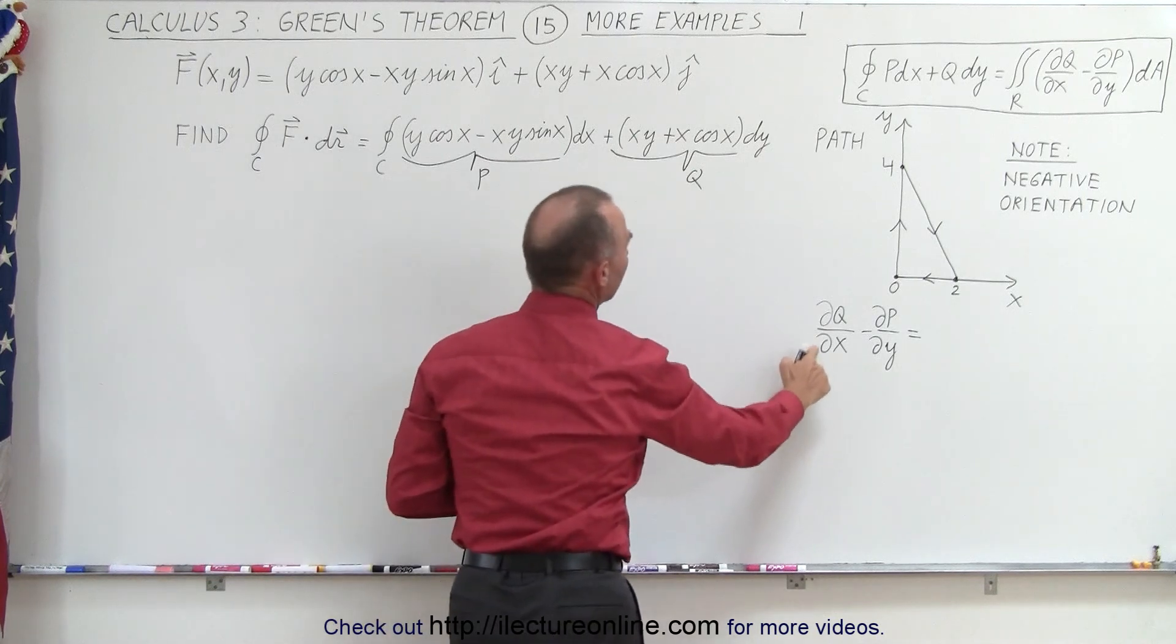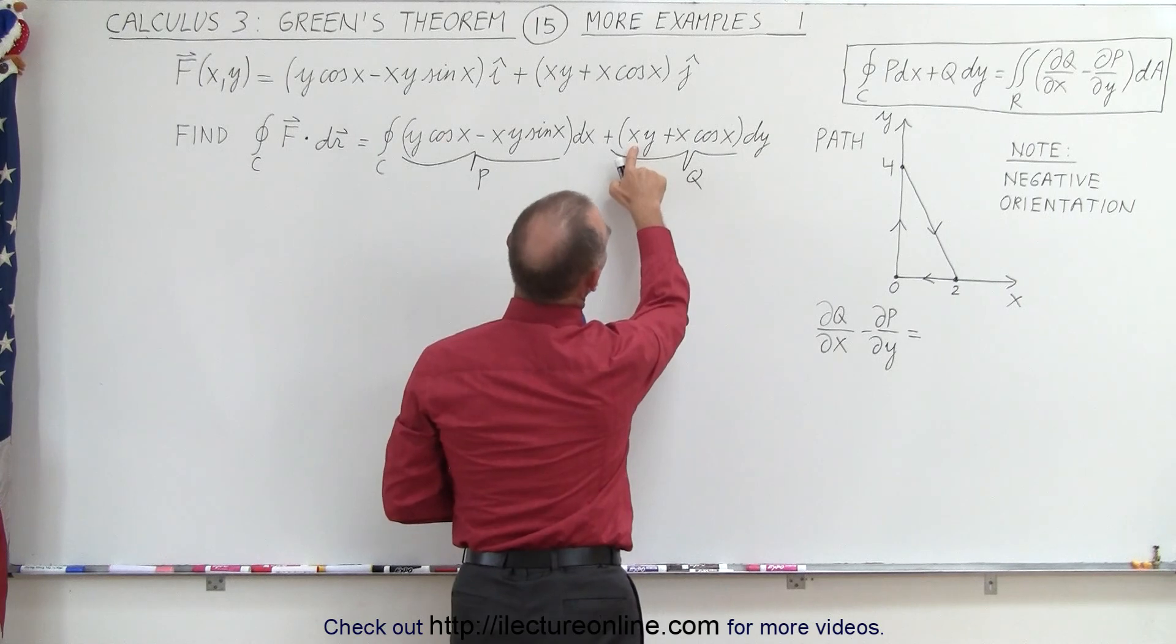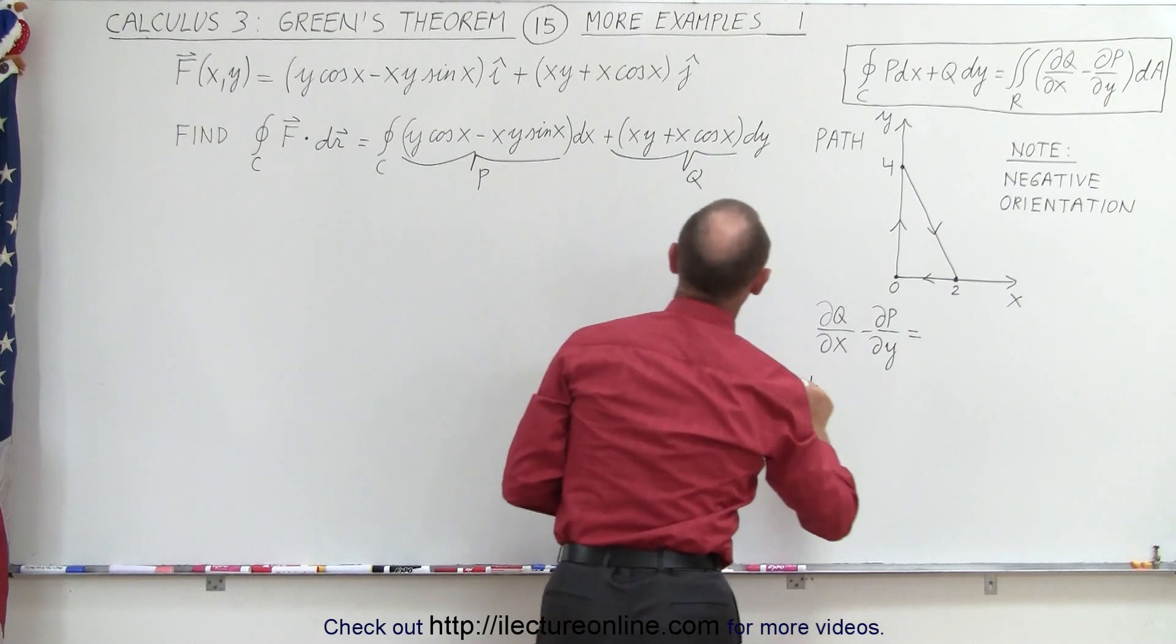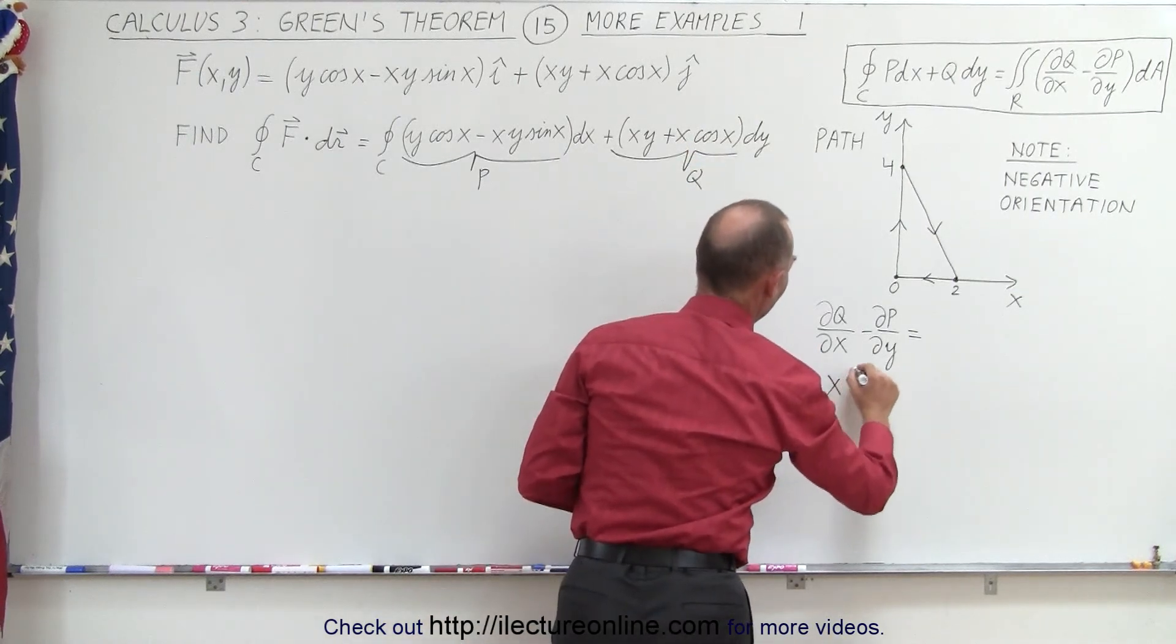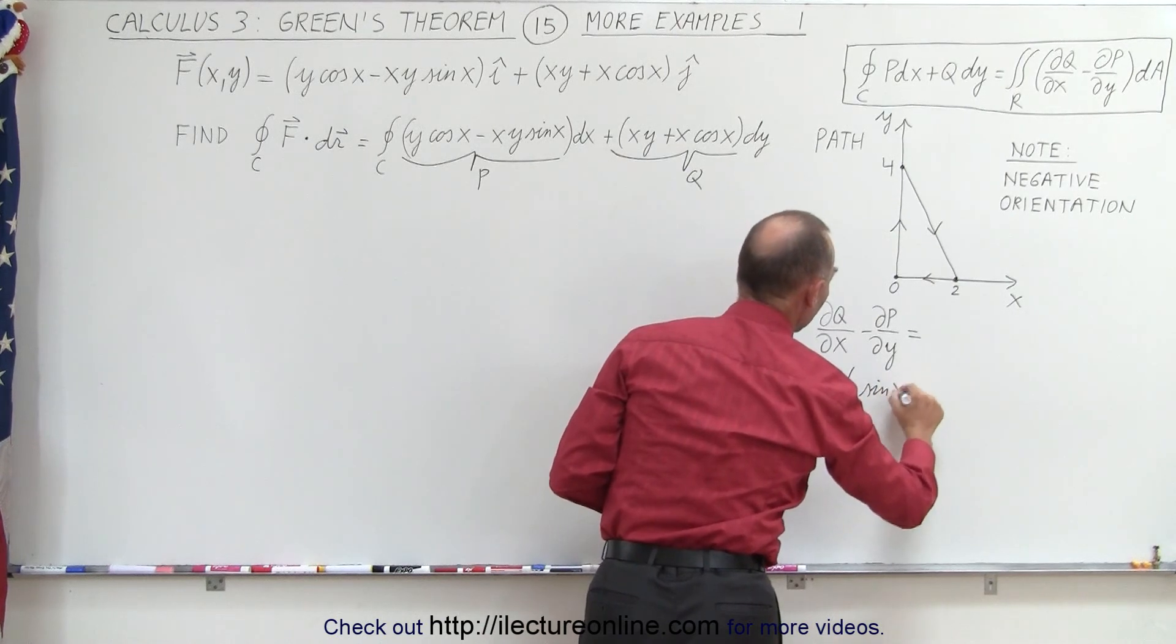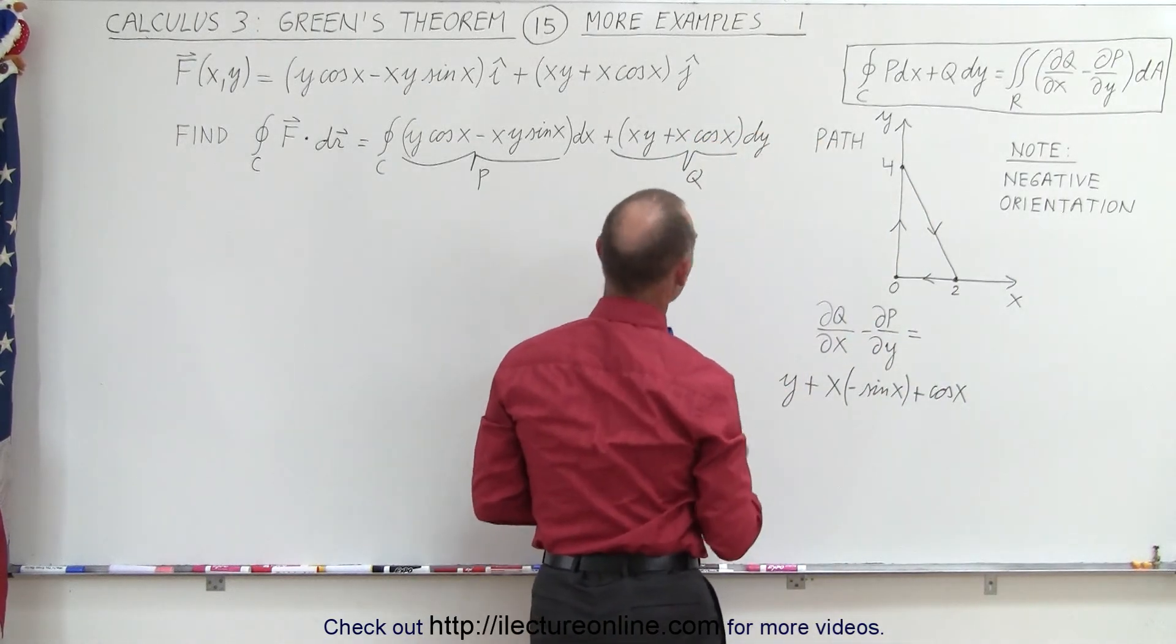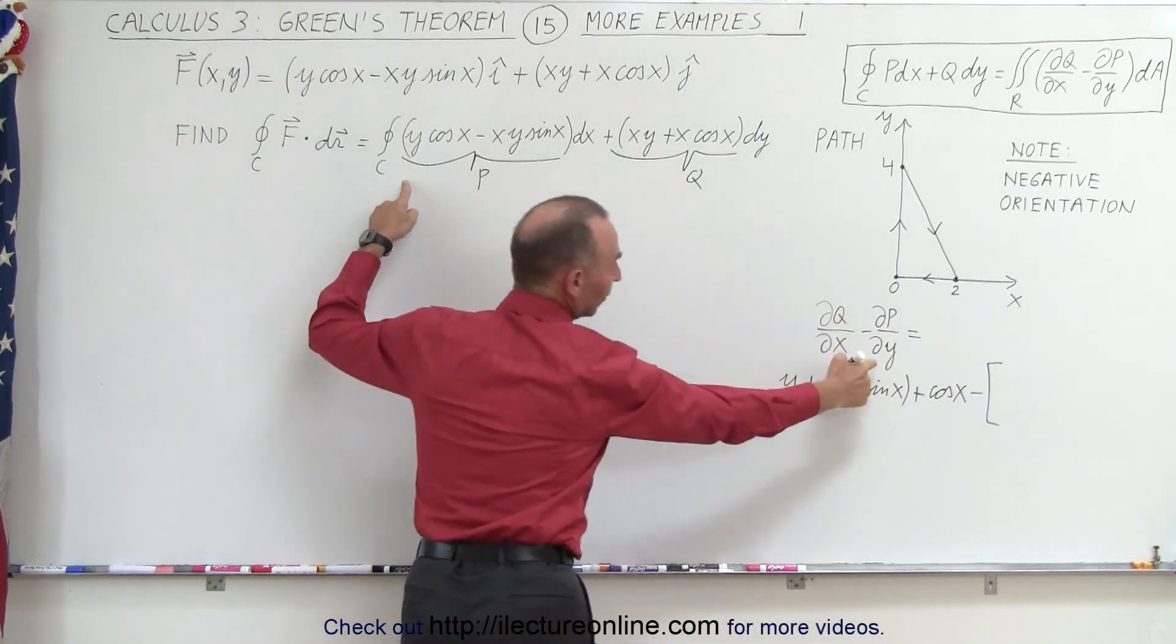So first we're going to take the partial derivative of Q with respect to X. So our first term right here with respect to X, that means we're going to get Y. So this is equal to Y plus, now here we have a product. So we take the first, X, times the derivative of the second, which would be minus the sine of X, plus the second, which is the cosine of X, times the derivative of the first, which is 1.